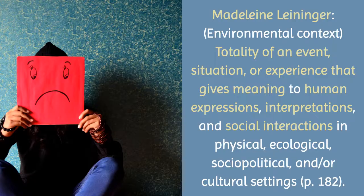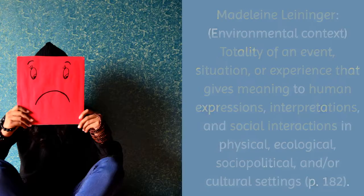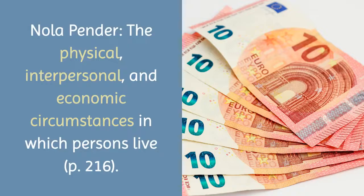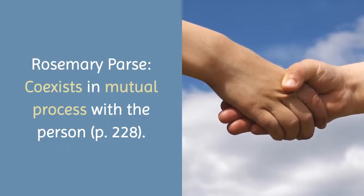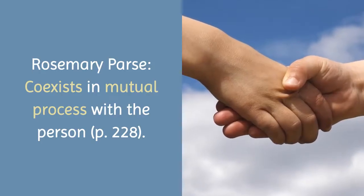All those pieces — physical, ecological, socio-political, and cultural settings — are how Leininger assesses the environment, and if you're following her theory, it's how you would assess the environment also. Pender defined environment as the physical, interpersonal, and economic circumstances in which persons live. An environment is coexisting in a mutual process with the person, according to Parse's theory.